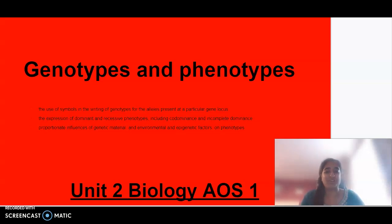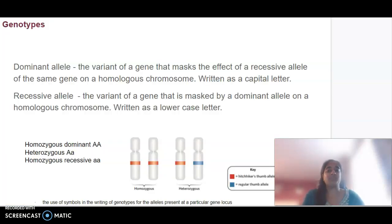Hello everybody and welcome to Unit 2 Biology Area Study 1. Today we are going to be looking at genotypes and phenotypes. Through this area study we're going to be looking at the symbols that may be used when writing genotypes for specific alleles. We'll be looking at dominant and recessive phenotypes and also what codominance and incomplete dominance looks like, and we'll be looking at the proportionate influences of genetic material and environmental and epigenetic factors that they can have on phenotypes.